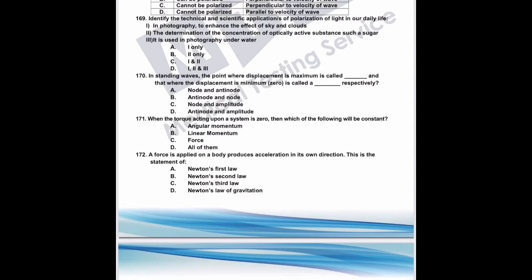Question 171: when torque on a system is zero, which quantity will be constant? Torque is the rate of change of angular momentum. If torque is zero, the change in angular momentum is zero, meaning angular momentum is constant. The correct answer is angular momentum.